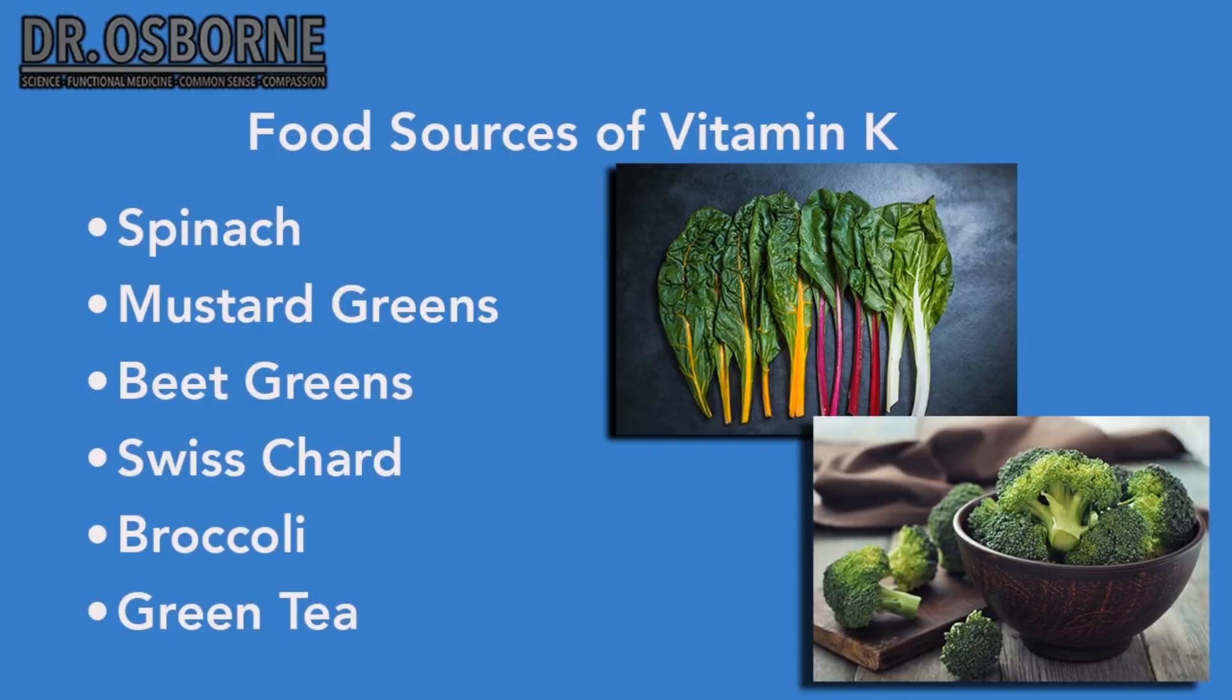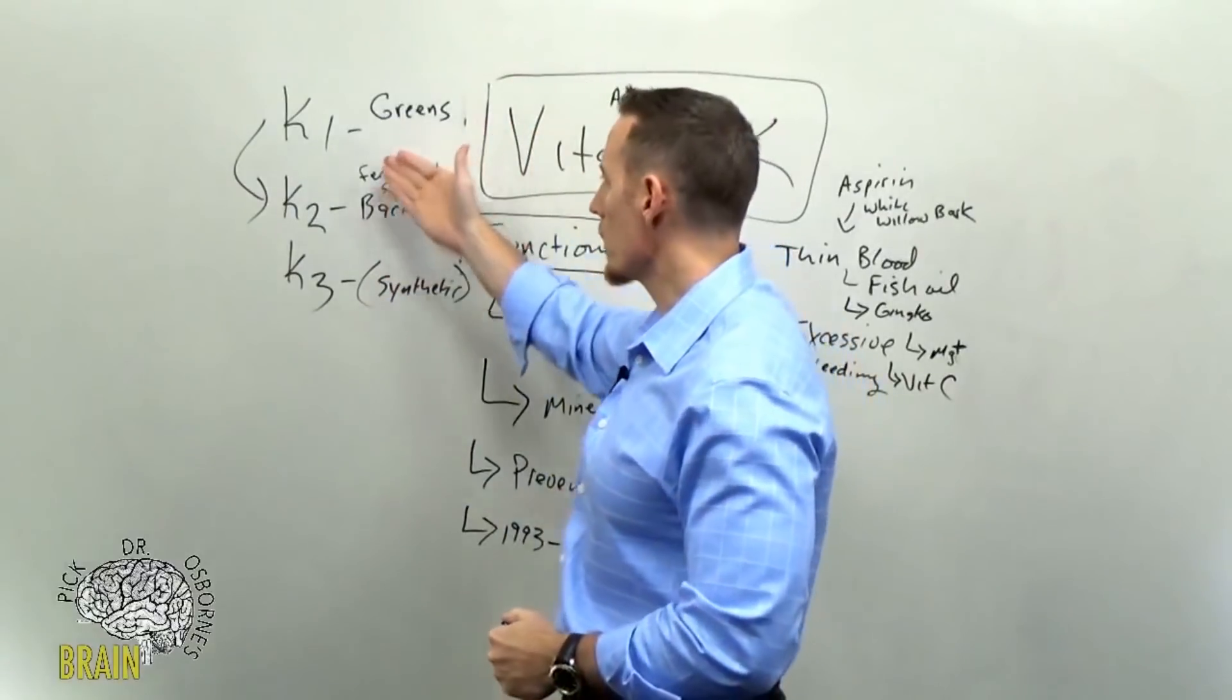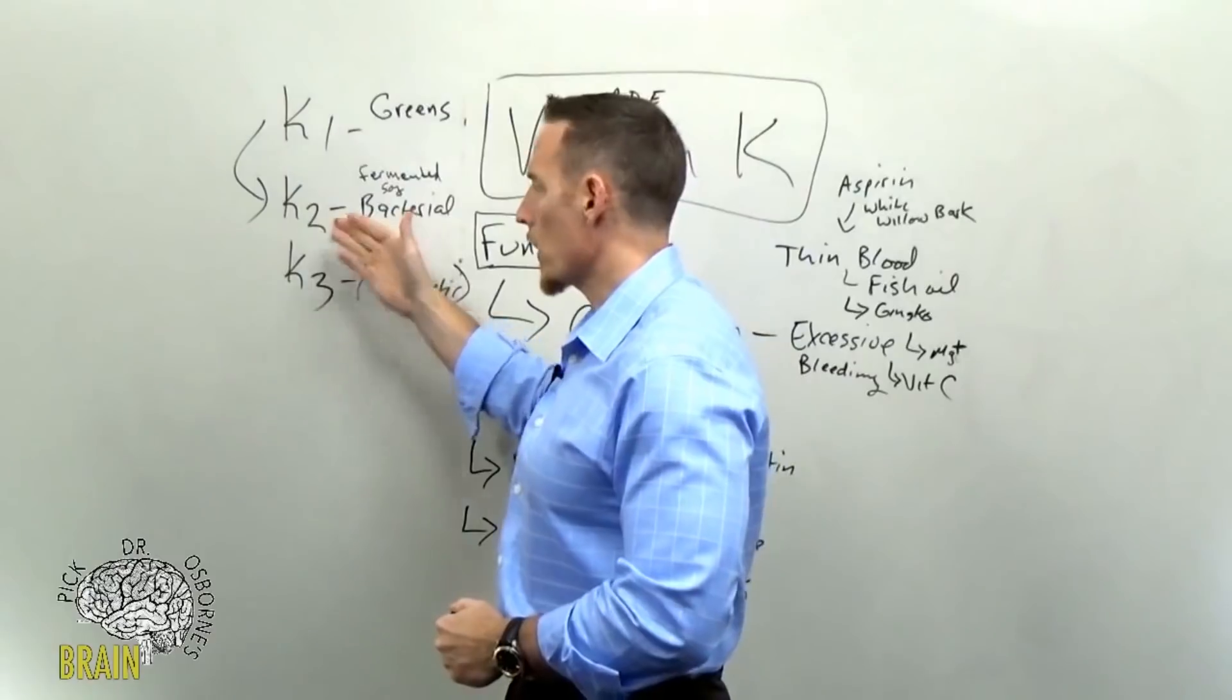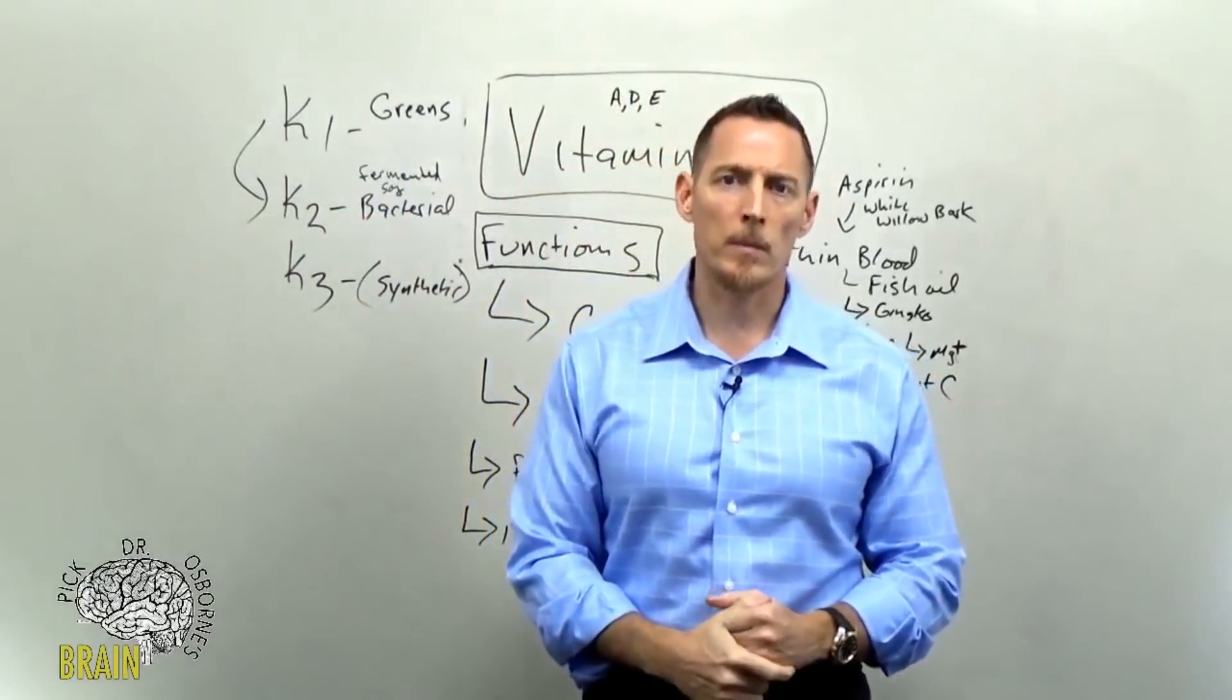One of the things that will cause a vitamin K deficiency is just a poor diet, a highly processed food diet. If you're not getting in these rich greens, or if the types of animal products you're eating are feedlot animals, you're not going to get as rich a source of vitamin K from that type of food.